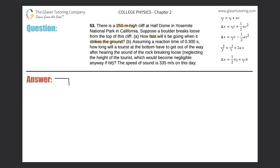So we have a cliff. The height of the cliff is 250 meters. Here's the ground below, and a rock is going to break off. If it just breaks off by itself, we know the initial velocity should be equal to zero meters per second. We also know that once it breaks off, the acceleration of the rock will be equal to the acceleration due to gravity, which is negative 9.80 meters per second squared.